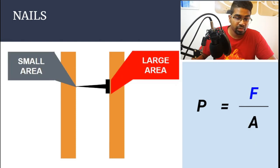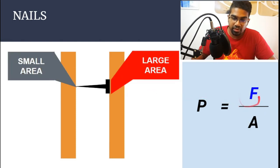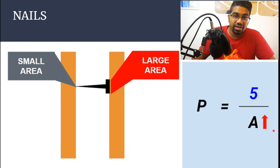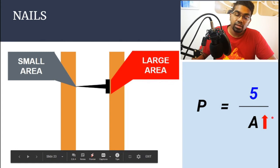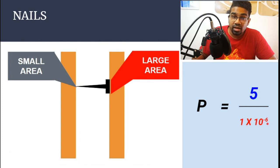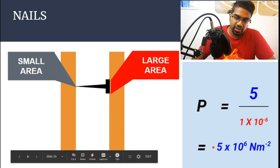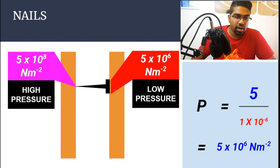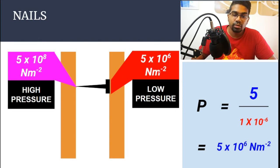Now let's compare with the larger area at the head of the nail. The force is the same — 5 newtons — but now the area is much larger. When we divide by a large number, we get a small value for pressure. Let's assume the area at the head is 1×10⁻³ m², which is 1 mm². The pressure at the head is 5×10⁶ N/m². Comparing both sides: same force, but the pressure at the tip (5×10⁸ N/m²) is 100 times greater than the pressure at the head (5×10⁶ N/m²).